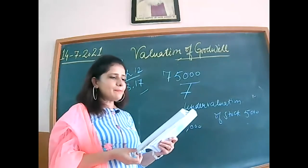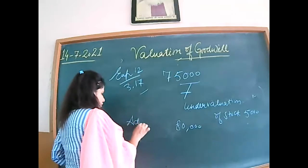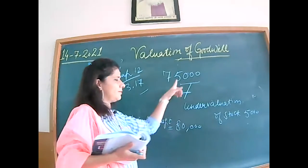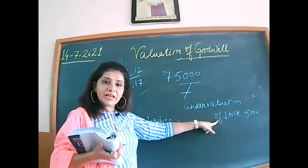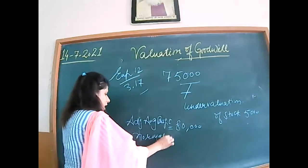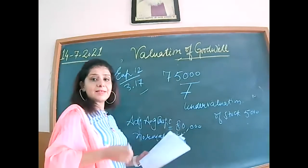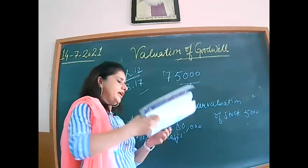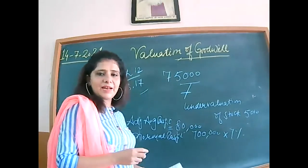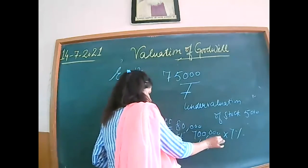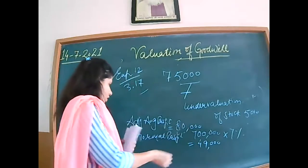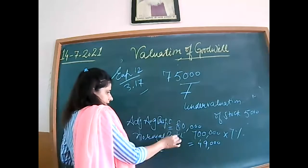The rest of the things are simple. This is my adjusted average profit. Now calculating normal profit: that is capital employed into rate of return. Capital employed in this case is 7 lakh, and the rate of return is 7%. So 7 lakh at 7% gives normal profit of 49,000. Now calculate the difference — actual profit minus normal profit gives the super profit, which comes to 31,000.